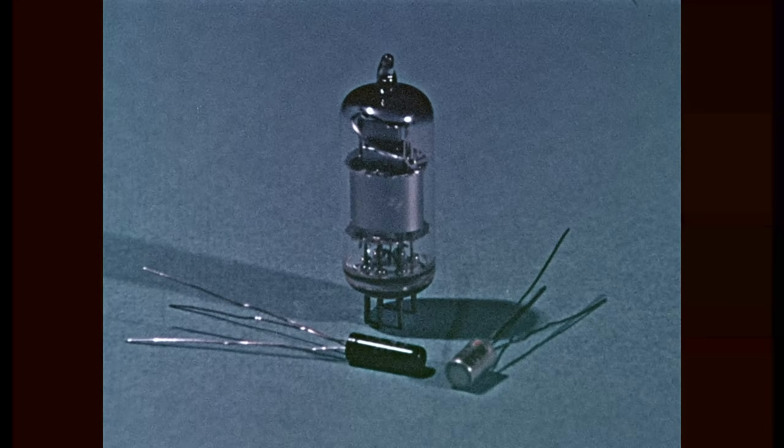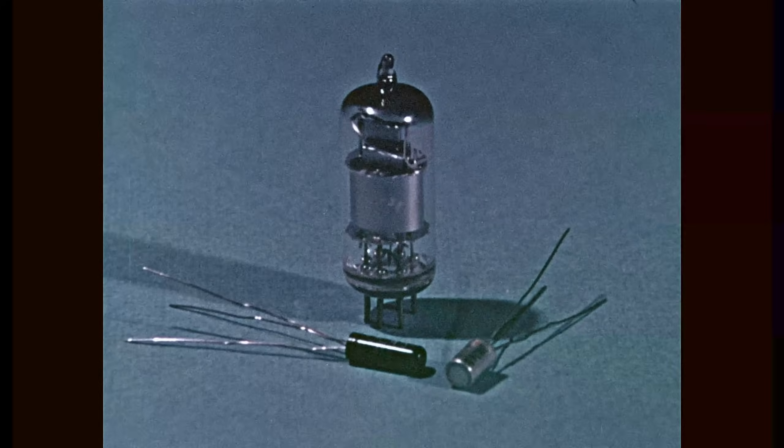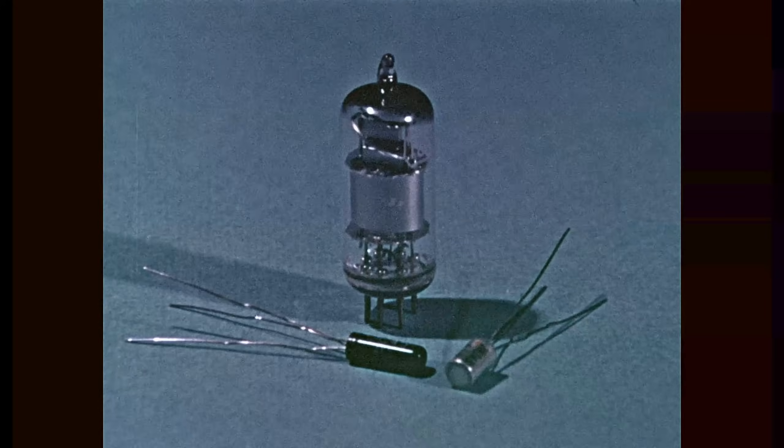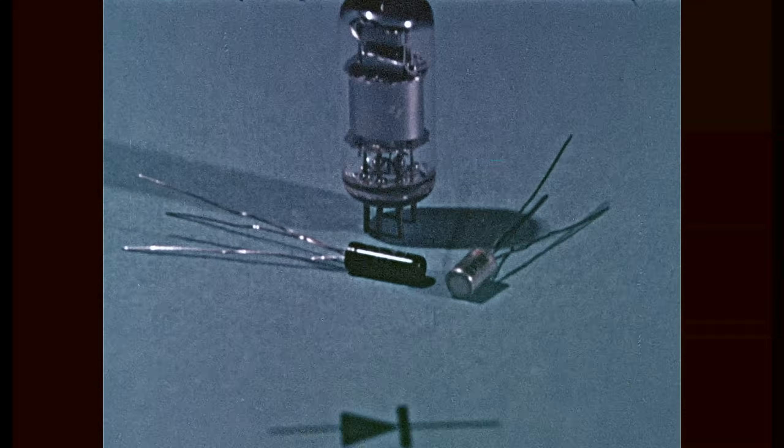Tubes and transistors are generally used to amplify a signal, but their simplest form, a diode, is used to change alternating current to direct current, that is, to rectify.